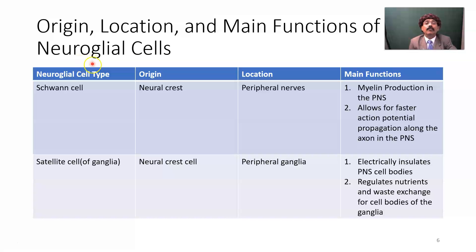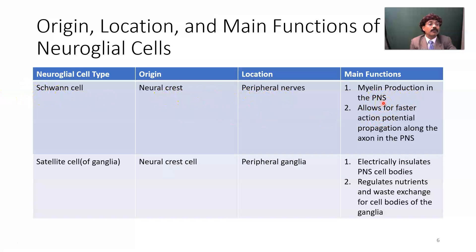Now looking at the neuroglial cells of the peripheral nervous system. Schwann cells: multiple Schwann cells can myelinate one axon, whereas one oligodendrocyte can myelinate around 60 to 80 axons in the central nervous system. Schwann cells originate from neural crest cells, are located in peripheral nerves, and are not present in the central nervous system. Their main function is myelin production in the PNS.